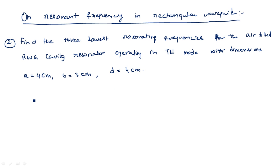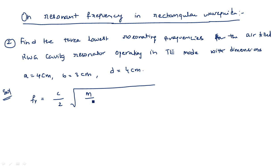The resonating frequency formula for a rectangular waveguide cavity is fr equals c/2 times square root of (m/a)² + (n/b)² + (p/d)². We know the formula — now let us simplify using the given values.